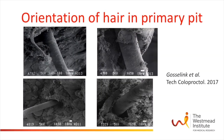Our group assessed the orientation of the hairs in the primary pilonidal pit by scanning electron microscopy in 17 patients with pilonidal disease. The hair was found to be orientated with its root end into the pit in 15 of the 17 patients. Here you can see four scanning electron microscope images showing a hair orientated with its root end into the primary pit.